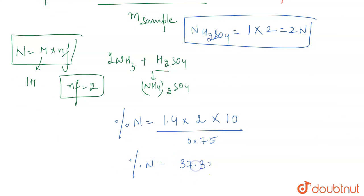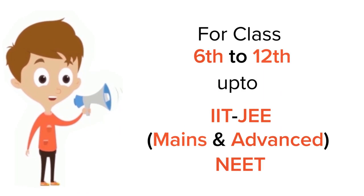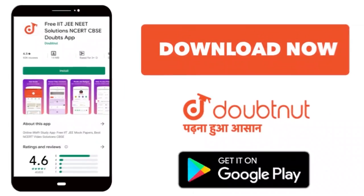As 37.33 percent, and this will be the correct answer for the question. For class 6 to 12, IIT-JEE, and NEET level, trusted by more than 5 crore students. Download Doubtnet today.